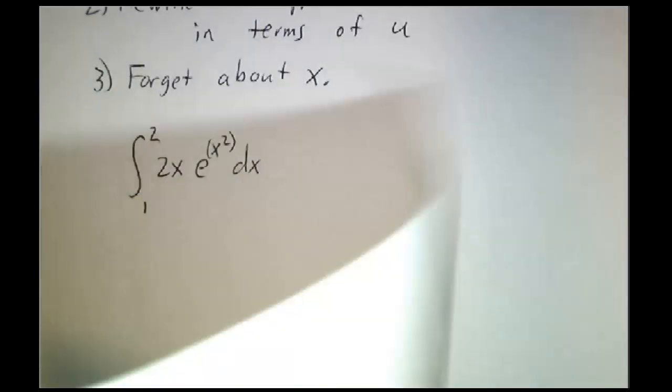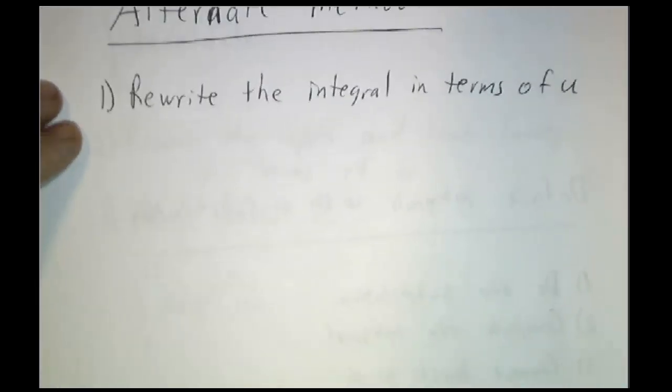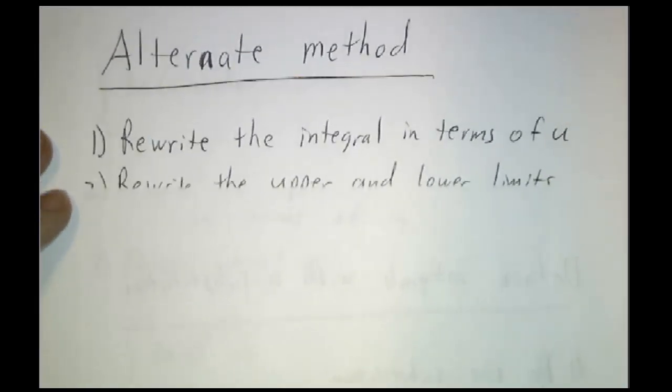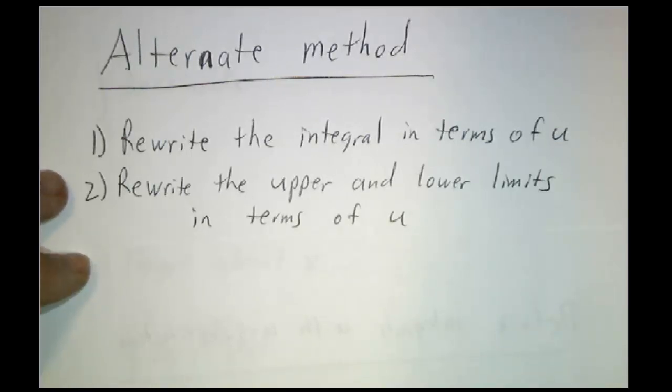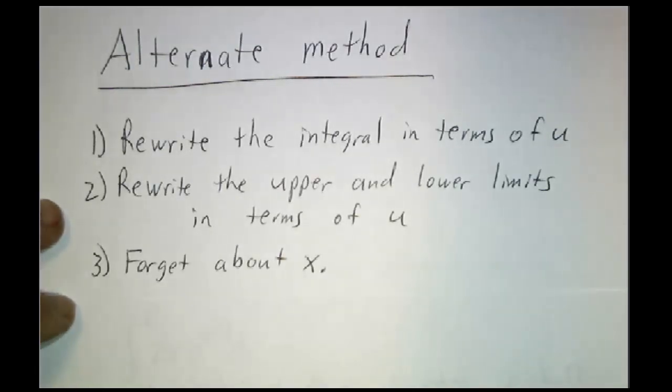There's another approach which is to write everything in terms of u. So it starts off the same as before, but instead of converting the function at the end to x, we'll convert the limits of integration to u. And we can completely forget about x.